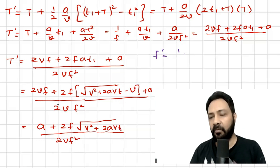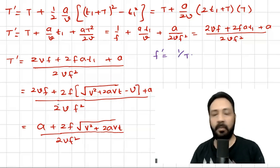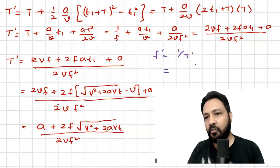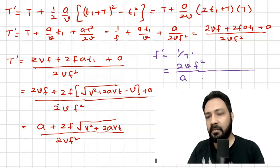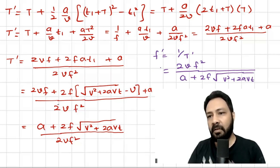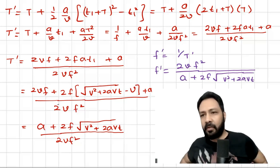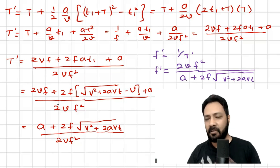The apparent frequency heard by the observer is the reciprocal of the time difference between two consecutive pulses reaching the ear around time t. So the apparent frequency is: f_apparent = 2vf² / (a + 2f√(v² + 2avt)). This is the final expression. That is how we solve problems when the source or observer moves with some acceleration. Thank you for watching this video.